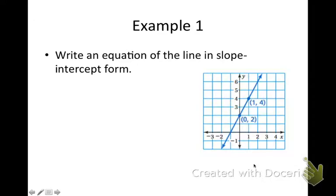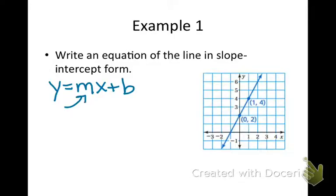Looking at example 1, when you look at this line, you see two points, so we have some coordinates and ordered pairs that we could use to calculate the slope — the change in y over the change in x. We can visually see the point where this line crosses the y-axis, which is the y-intercept. So we need to identify the slope or calculate it, and we need to identify the y-intercept.